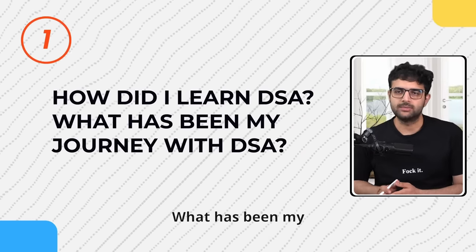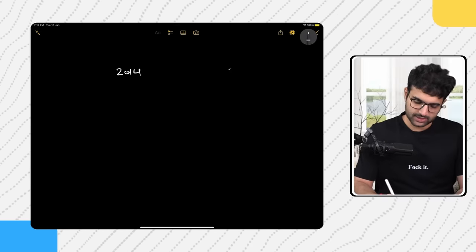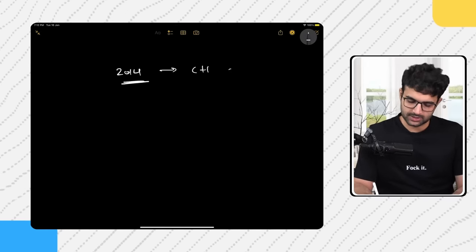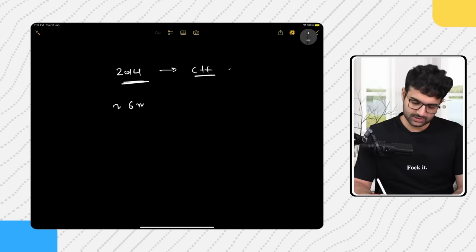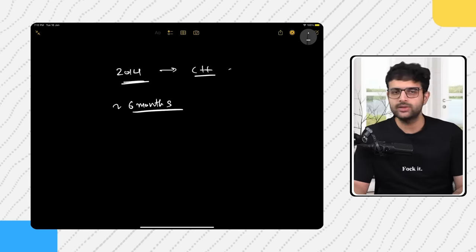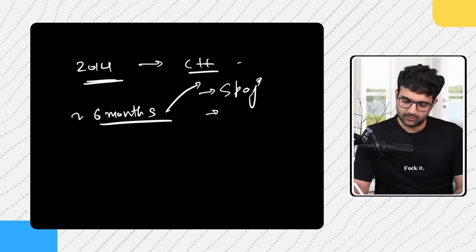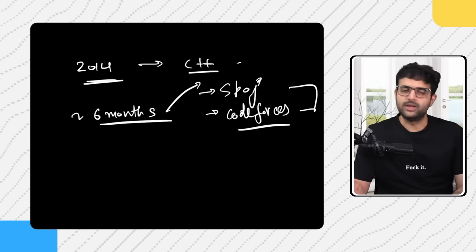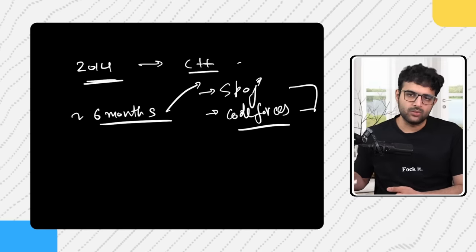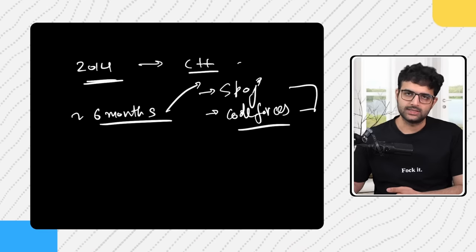The first point: how did I learn DSA? I started doing DSA back in 2014 when I joined college. The language of choice for me was C++, and this was the only thing I coded for around six months — I didn't know what dev was or how to do dev. After six months I got into a college group and started doing development, but until then it was only algorithmic problem solving, mainly on SPOJ and a little bit of Codeforces.